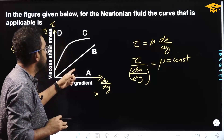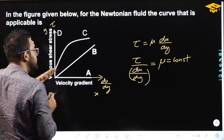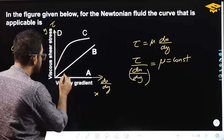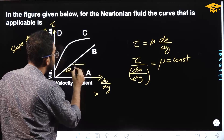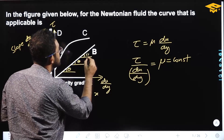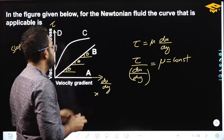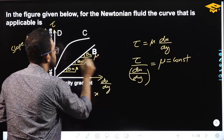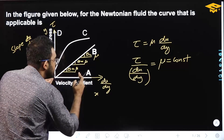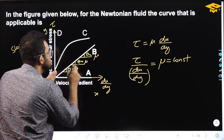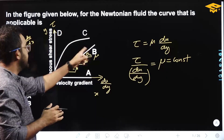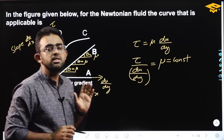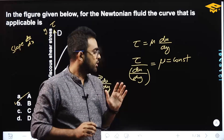This curve represents Newtonian fluids because the viscosity value remains constant. So curve B is our option — option B is the correct answer. Next question.